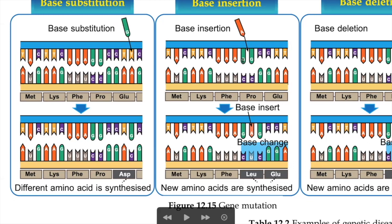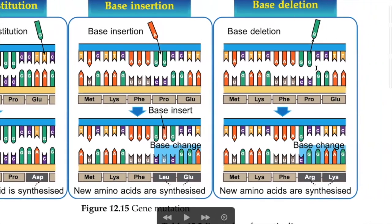For base insertion: suddenly an A appears and inserts itself — insertion means it sneaks in. So where there was GG, suddenly there is an A in between. New amino acids will be synthesized and the sequence changes. For base deletion: G is deleted and removed. The original sequence GGC loses a G and becomes GCC. To produce PRO you need CCG, but since the base is removed the sequence becomes CGG, so a different amino acid is produced, disturbing protein production.